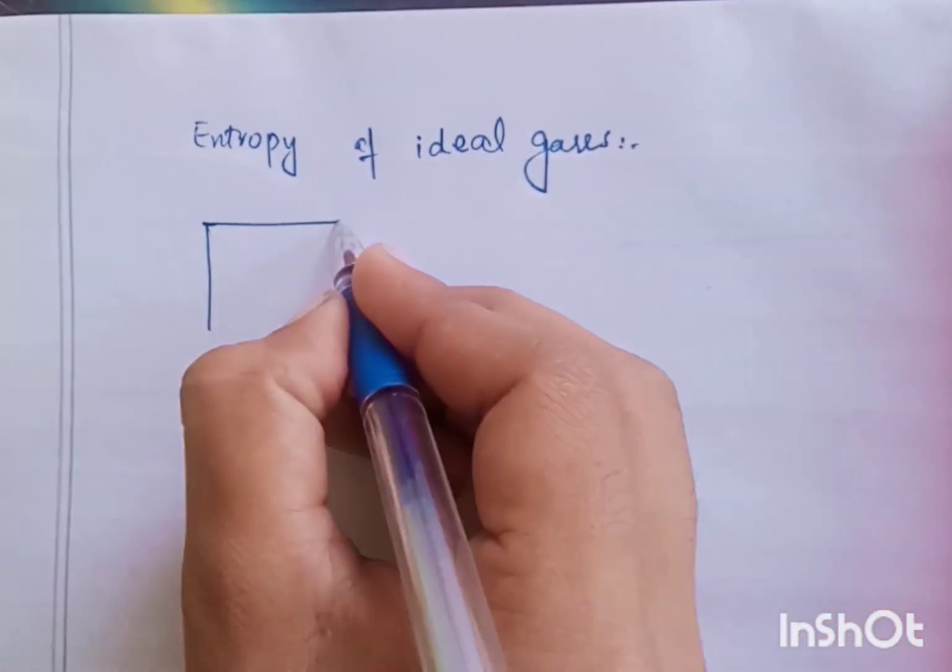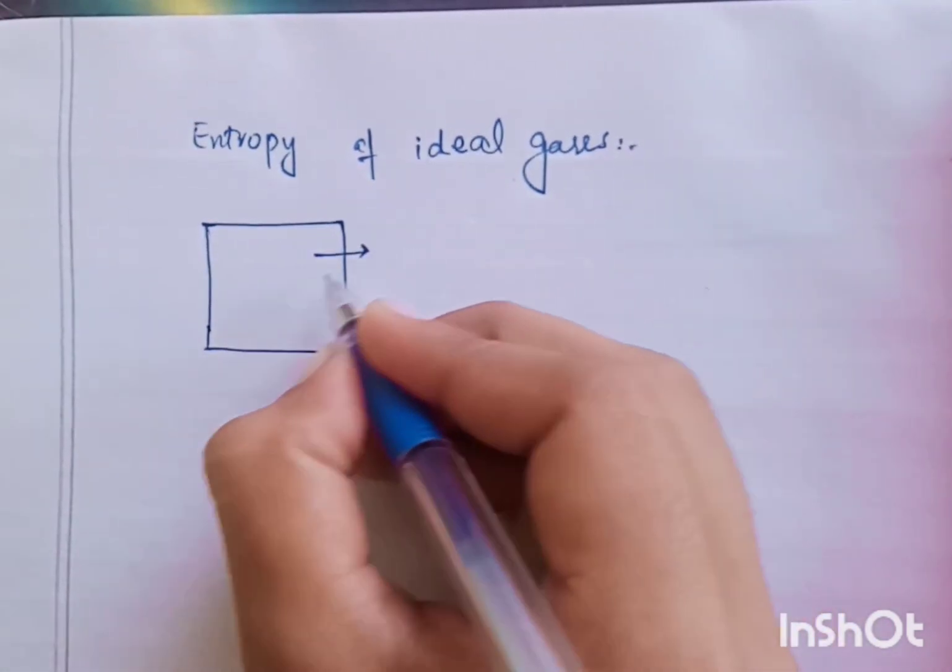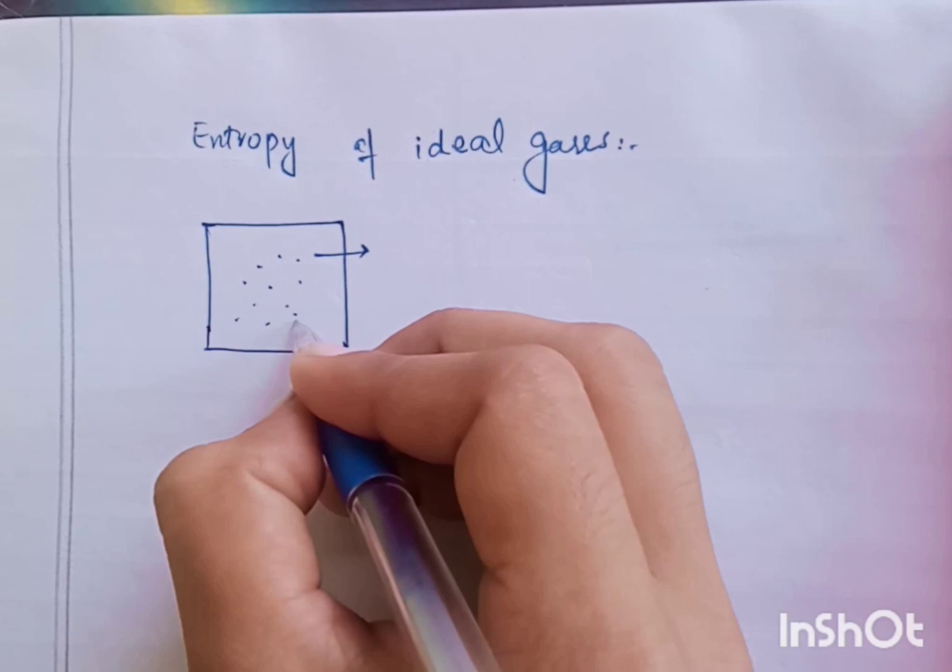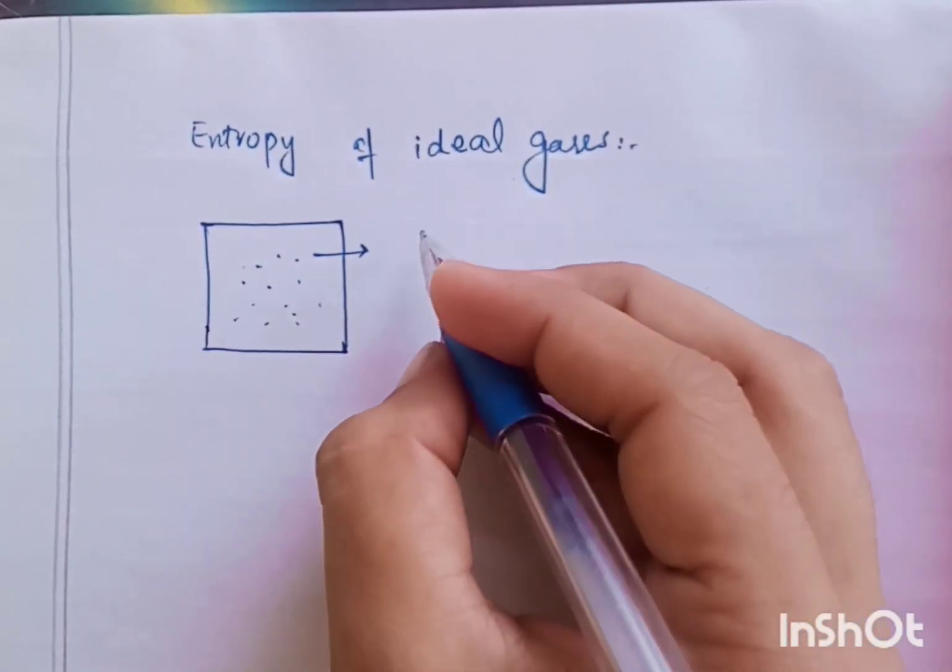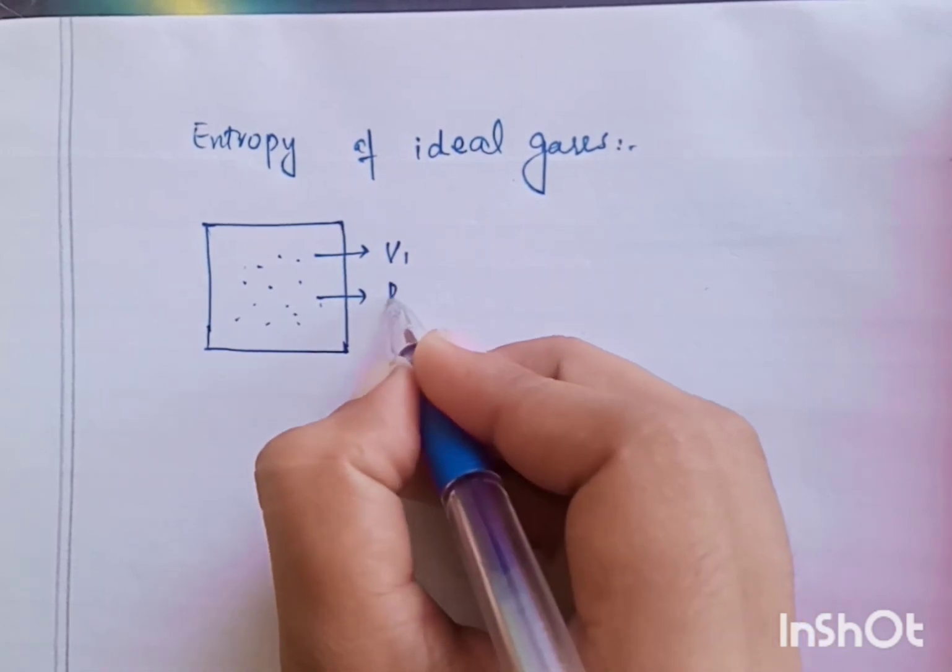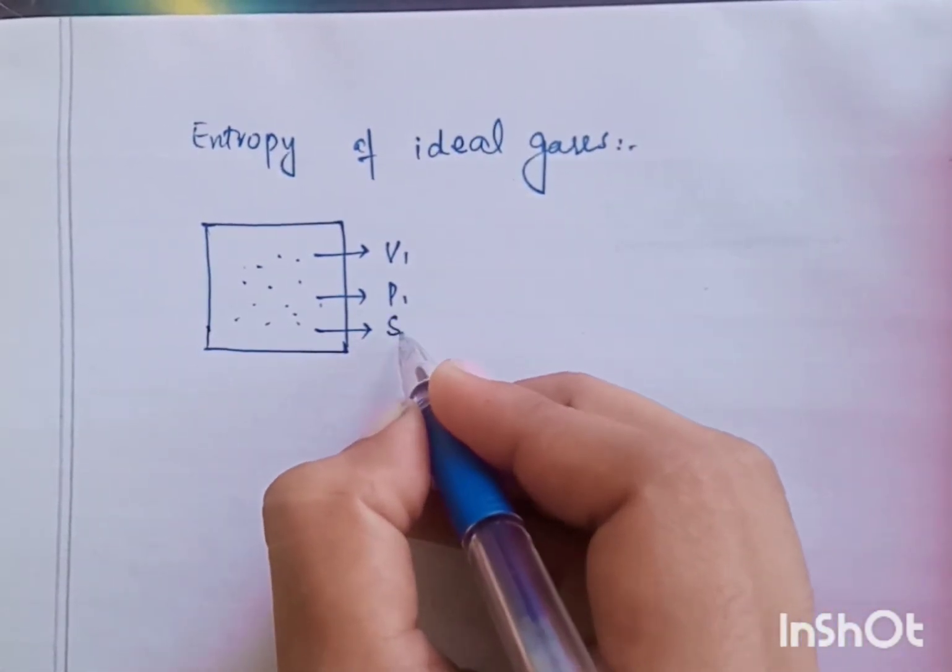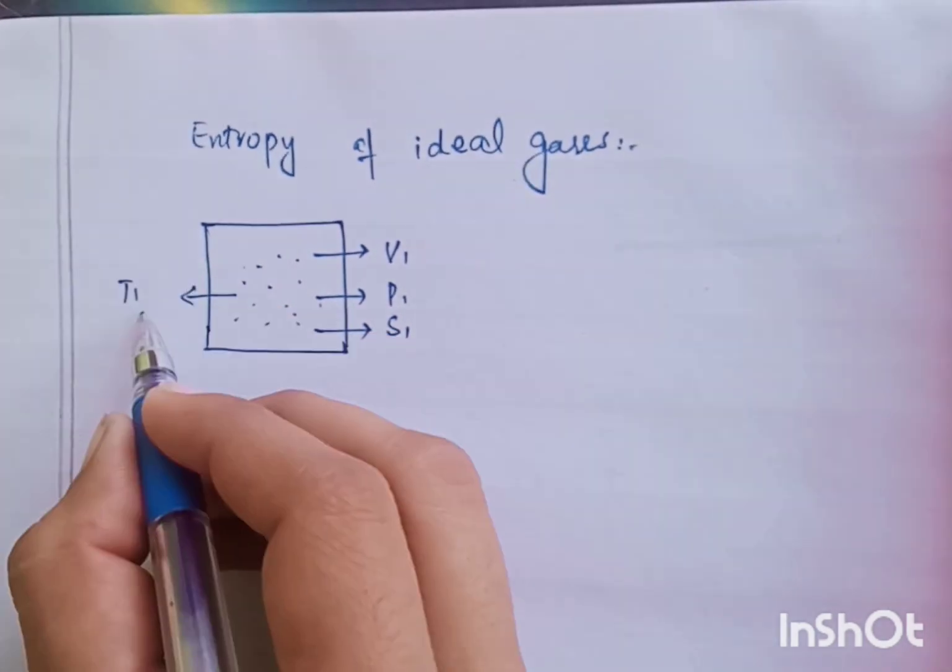Suppose that we have a container here. We have a container having particles in it. Its volume is V1, its pressure is P1 and its entropy is S1 and its temperature is T1.